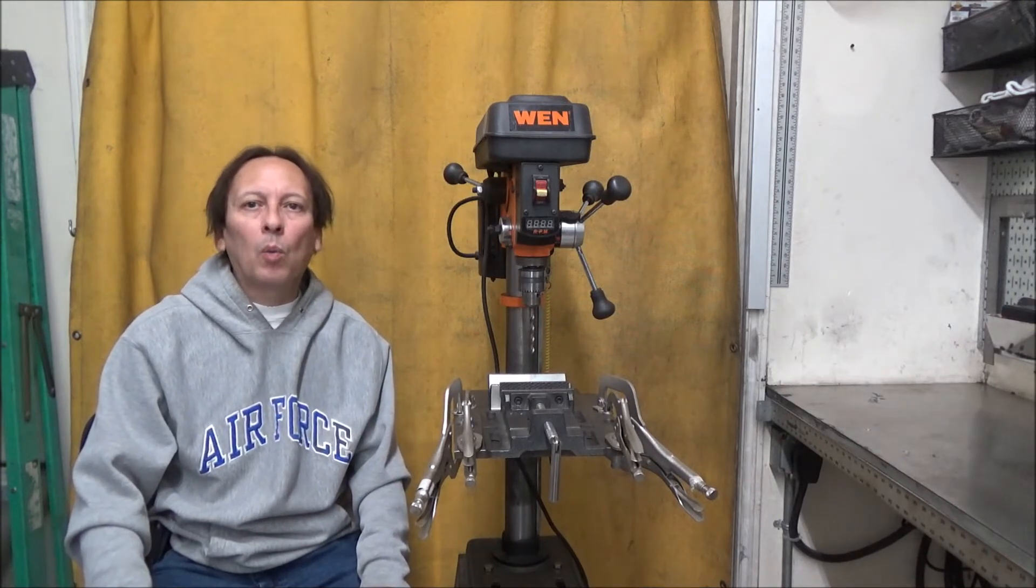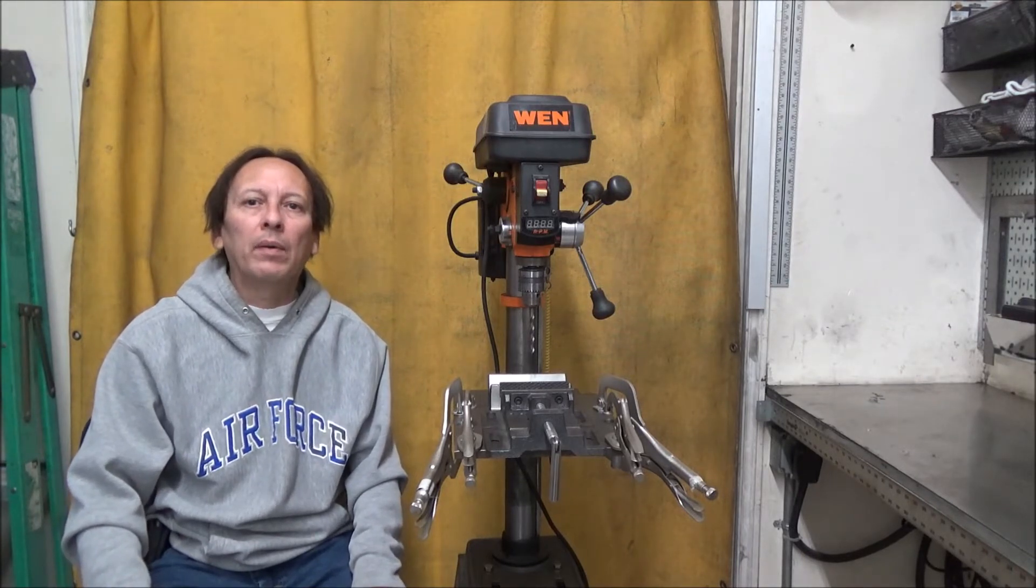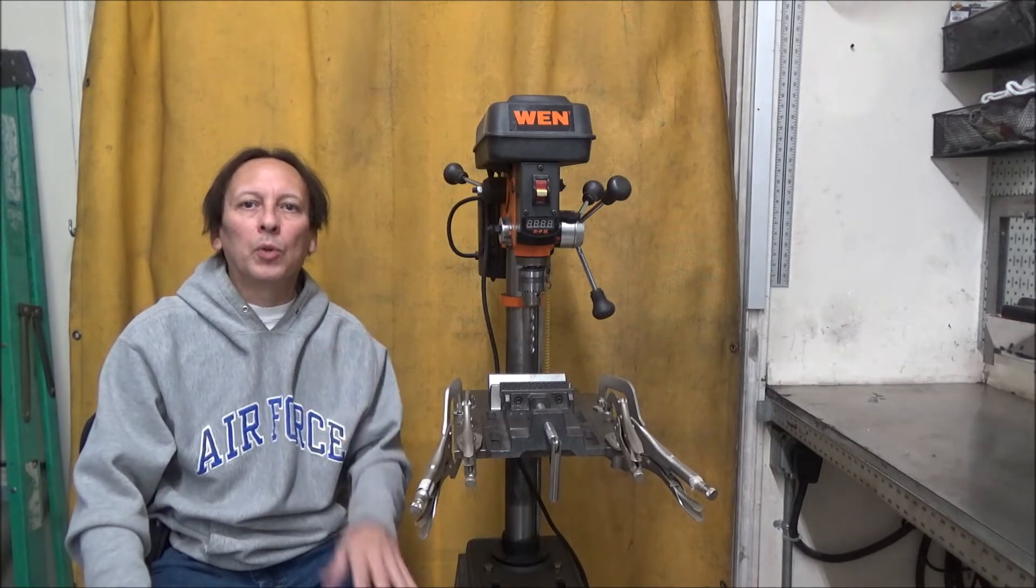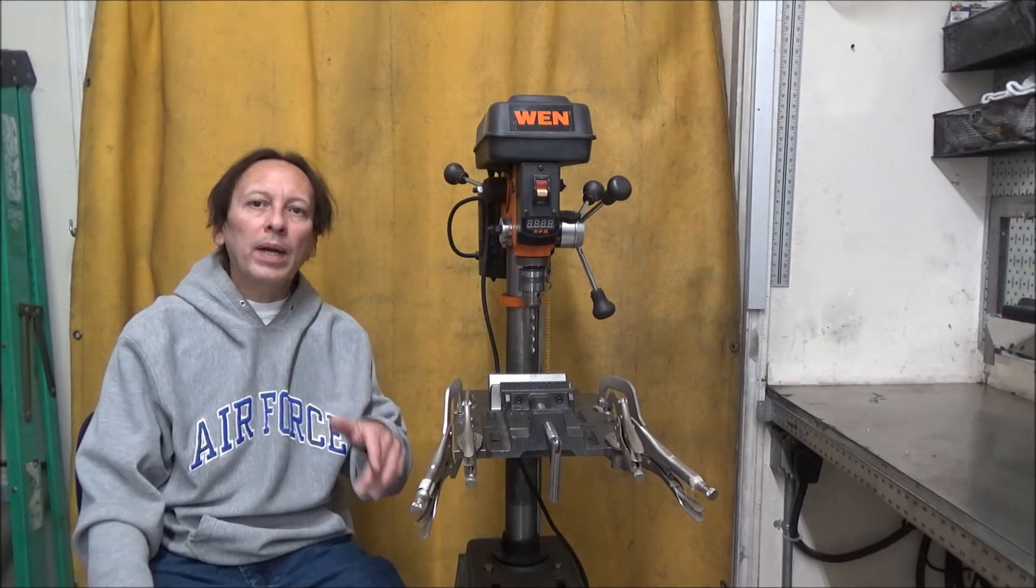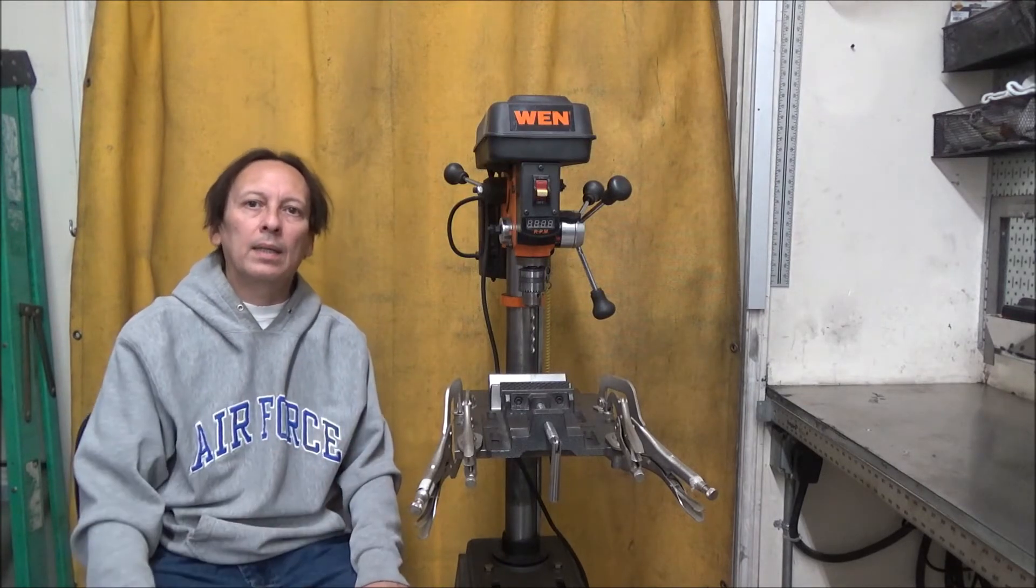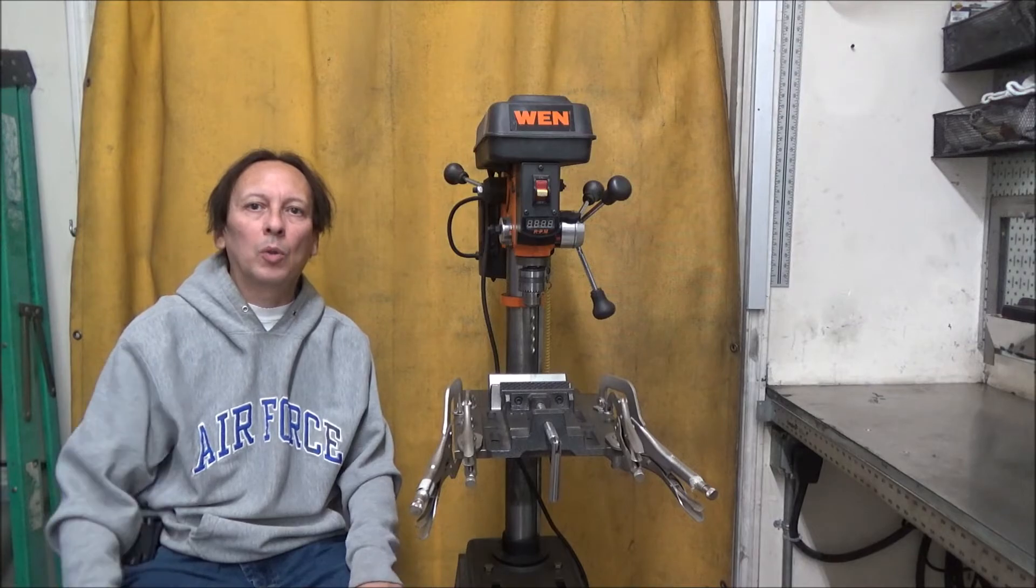Now the bearings I guess are wearing just a little bit and it's got about five to seven thousandths of run out. And if you're not familiar with run out, it's the amount of wobble within the drill. So I'll go ahead and give you a view from the bottom to the top and then I'll go into more detail of what I did to modify this drill press.